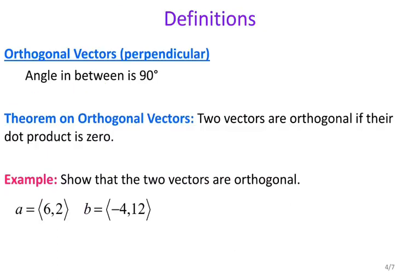The next thing we're going to look at is something called orthogonal vectors. So orthogonal is just a fancy word for perpendicular. Anytime you hear me say the word orthogonal, it's the same meaning as perpendicular, which of course means the angle in between is 90 degrees. The theorem on orthogonal vectors tells us that two vectors are orthogonal or perpendicular if their dot product is zero.